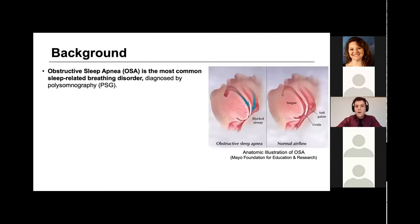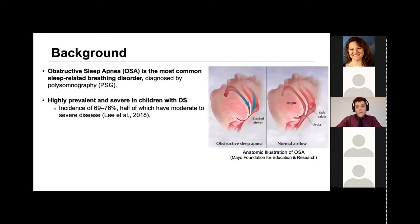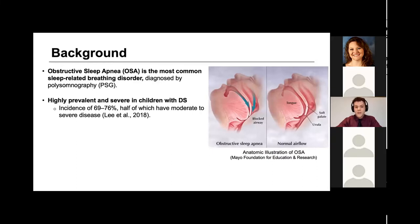To provide you with some context on the focus of my research: obstructive sleep apnea, or OSA, is the most common sleep-related breathing disorder and is diagnosed by a sleep study known as polysomnography, or PSG. Obstructive sleep apnea is highly prevalent and typically more severe in children with Down Syndrome. A meta-analysis from 2018 revealed an incidence of 69 to 76 percent, and half of these children had moderate to severe obstructive sleep apnea.